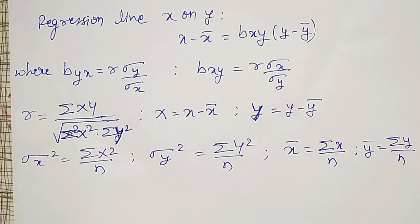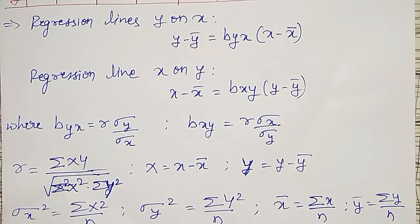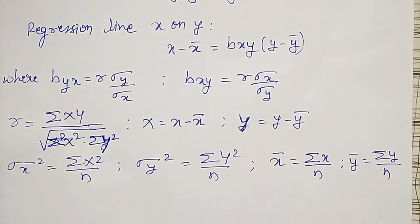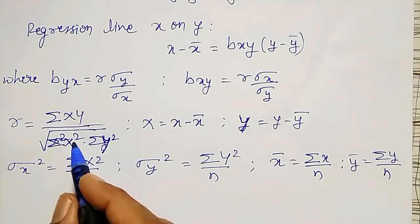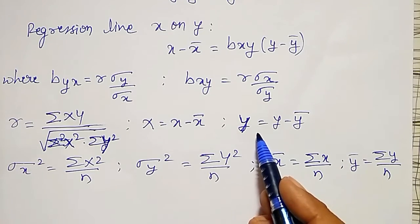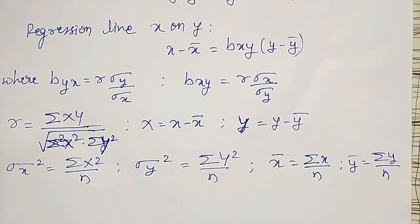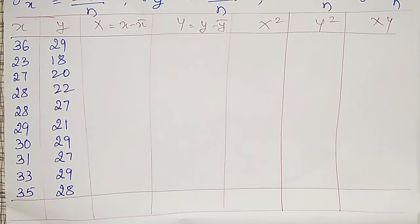Using all these formulas, I have to fit the regression line Y on X and X on Y. To find out these things, I have to prepare the table — I need summation of capital X-square, capital X equal to X minus X-bar, capital Y equal to Y minus Y-bar, and summation XY. I will prepare that table and come back. Here, we have prepared the table according to what we required.